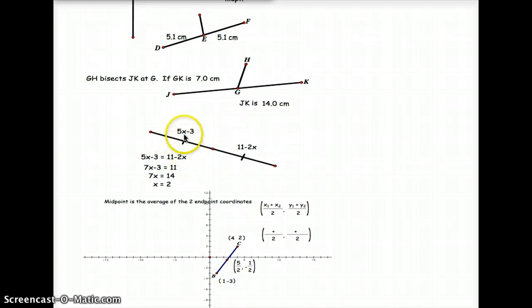So basically, this segment here that is represented by 5x minus 3 is equal to this segment here that is represented by 11 minus 2x.